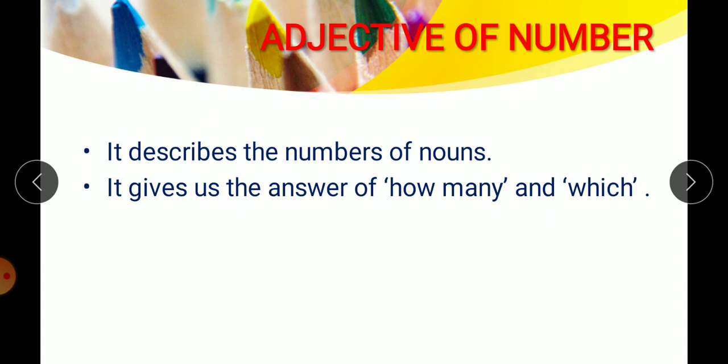It also gives the answer of 'which' — like which position you got, on which seat you were sitting, in which period you will go to the library. The answers: 'I was sitting on the first seat', 'We will go to library in the fourth period.' So words like first, fourth, second, third, fifth — they are also adjectives of number. In adjective of number, we include both ordinal numbers (first, second, third) and cardinal numbers (one, two, three, four).